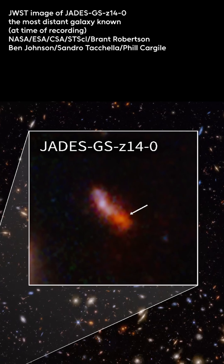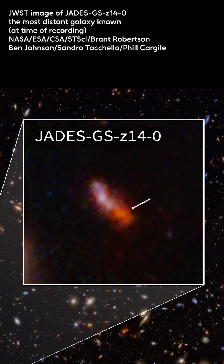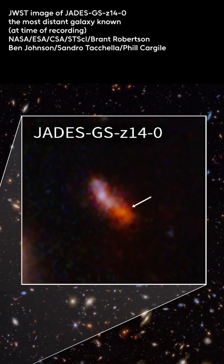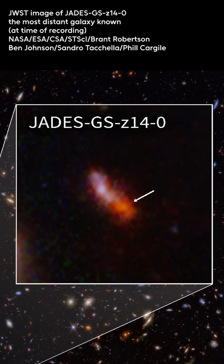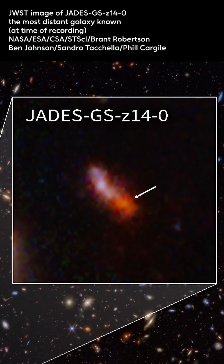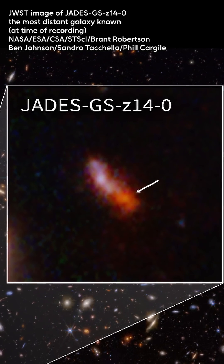The James Webb Space Telescope, with its ability to measure the masses of galaxies some 300 million years after the Big Bang, had some other ideas. Meet JADES-GS-z14-0, a galaxy with a redshift of about 14.3, with far more mass than we thought should be possible in a galaxy so early in the universe.